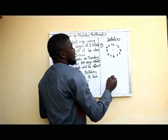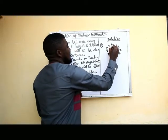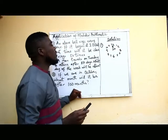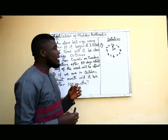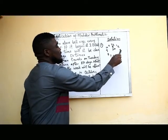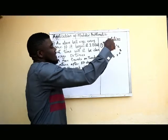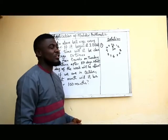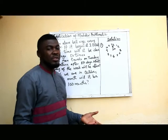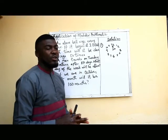Now, if this is our clock, the alarm bell begins at 2 o'clock. Somebody who does not know modular arithmetic would start counting from 2 o'clock: 1, 2, 3, 4, 5, 6, 7, 8, 9, 10, 11, 12... up to 50 times. That is a whole lot of work, and in the course of counting you might make mistakes. That is why we have modular arithmetic to help us solve questions like this.